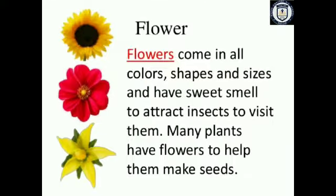The next part is our flower. The flower is the most attractive part of the plant — it looks very beautiful and has a very good smell. Not only humans, but many insects are also attracted to flowers. Because of the flower's attractiveness, the pollination process can be completed. Flowers help in seed preparation through pollination, and insects help complete that pollination process. That is the reason flowers are so beautiful.